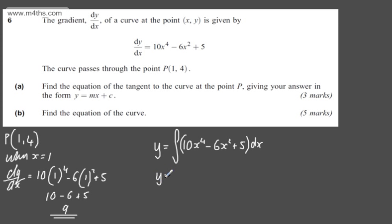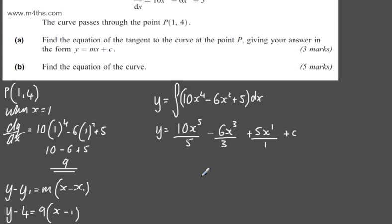We raise by a power and divide by the new power. So we'll have 10x^5/5 - 6x^3/3 + 5x^1/1 plus a constant of integration. Tidying this up, we can say y = 2x^5 - 2x^3 + 5x + c.